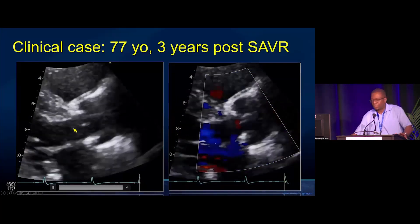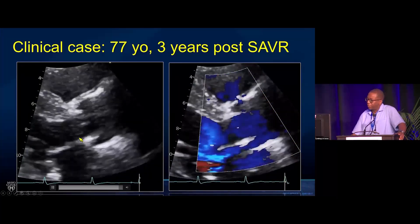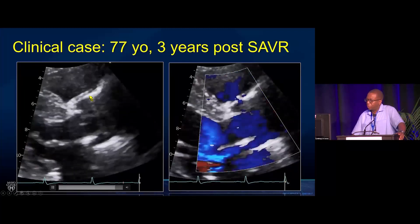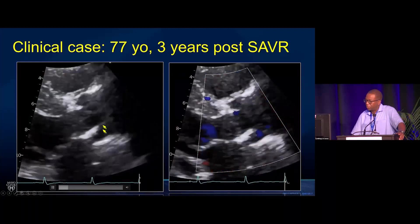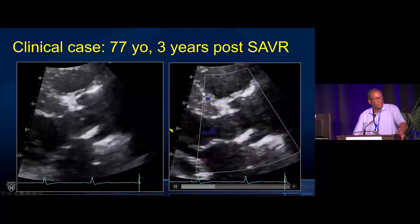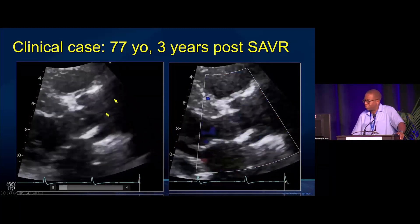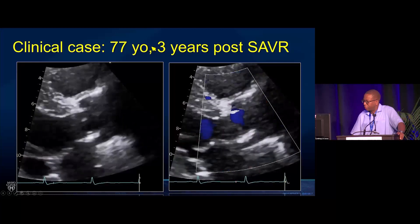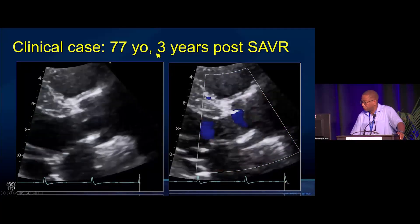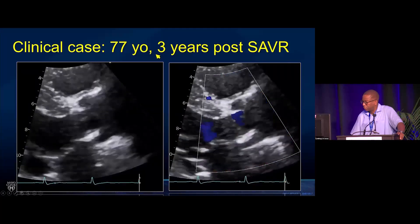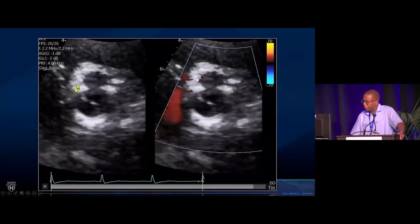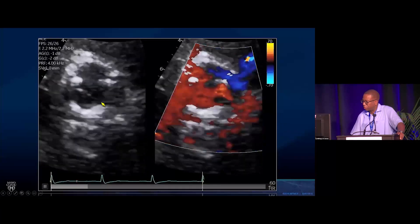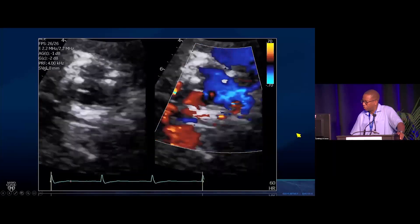The background is blue because the echo images show up better. This is a color-compared view, a zoomed-up view of the parasternal long axis of the aortic valve prosthesis. You can see the aortic valve prosthesis in 2D and then color across the aortic valve. This is the short axis of the valve, a zoomed-up view of the aortic valve prosthesis — you can see the struts — and then color flow across the aortic valve.